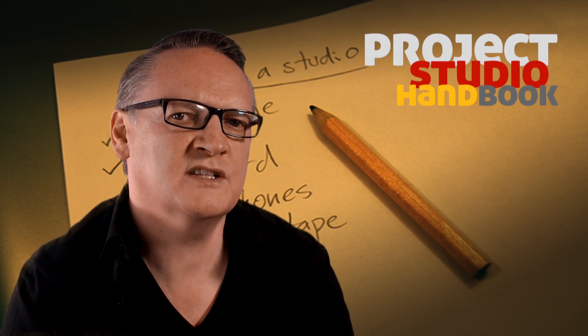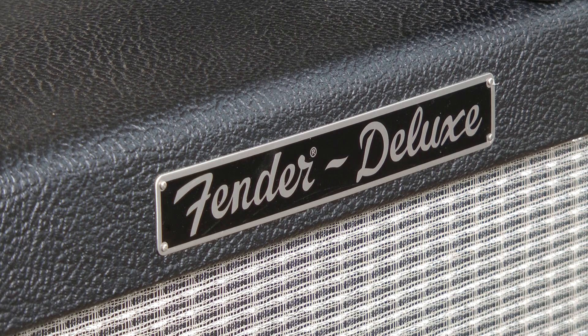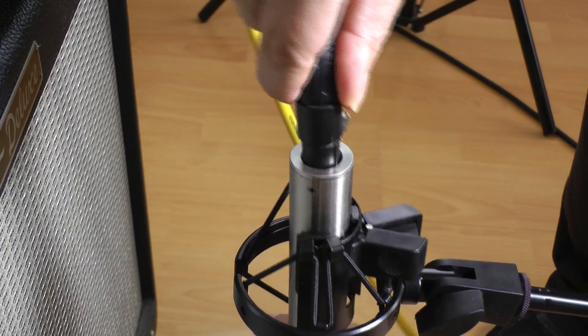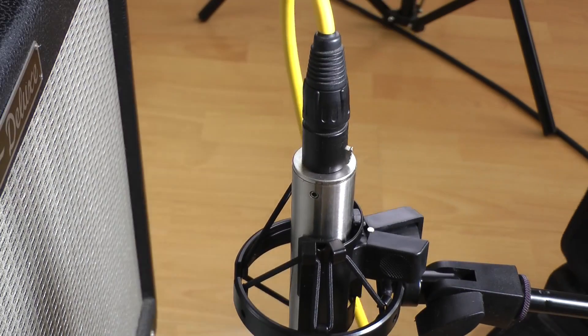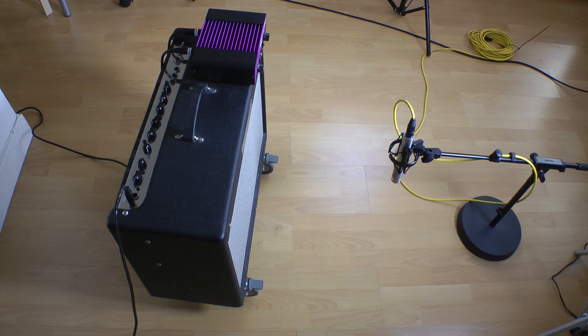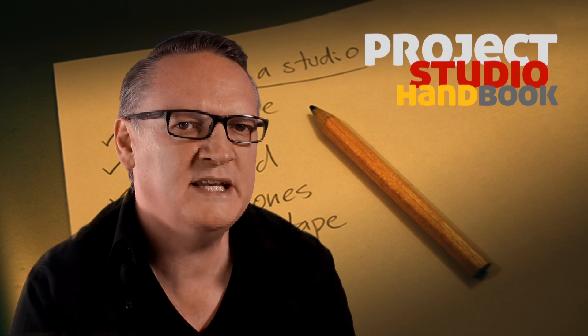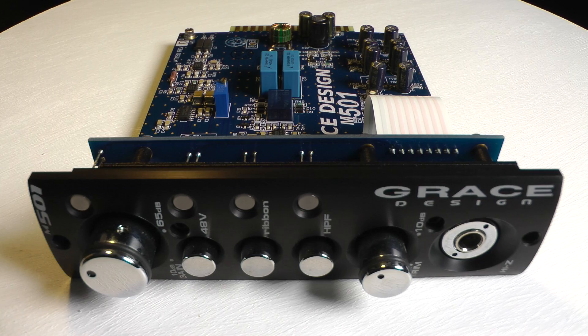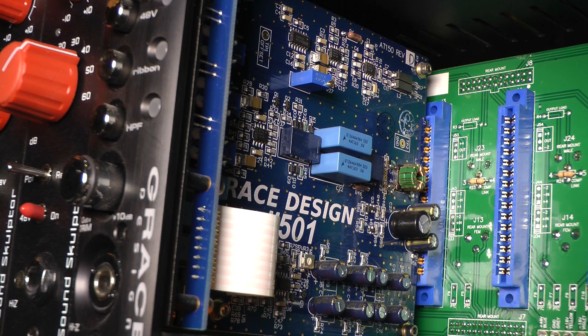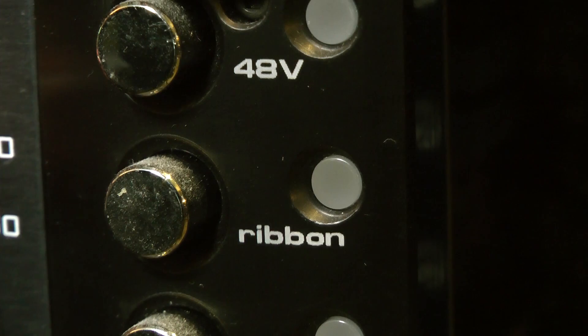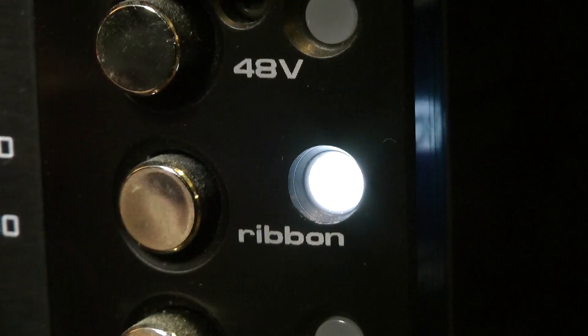Impedance mismatches between modern dynamic and capacitor mics and mic pre-s are rare and often inaudible. However, ribbon mics have lower impedances and outputs than dynamic and capacitor mics, and their frequency response and output level can be greatly affected by many mic pre-s. It is therefore advisable to match them with a mic pre that features circuitry capable of accommodating them.